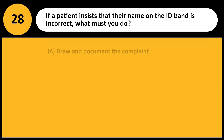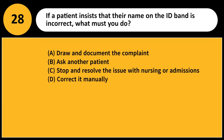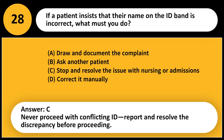If a patient insists that their name on the ID band is incorrect, what must you do? A. Draw and document the complaint. B. Ask another patient. C. Stop and resolve the issue with nursing or admissions. D. Correct it manually. Answer: C. Never proceed with conflicting ID; report and resolve the discrepancy before proceeding.